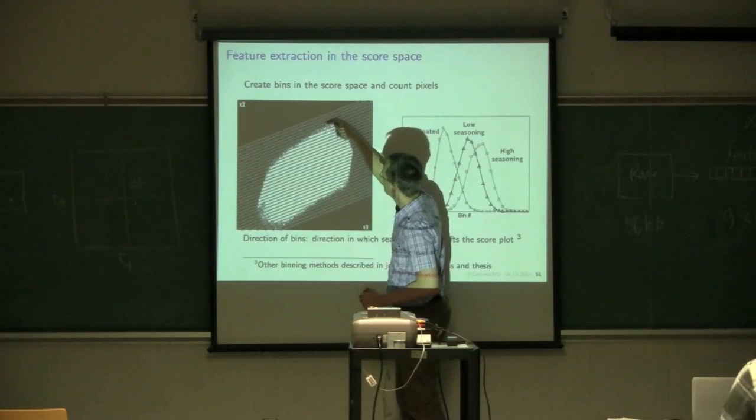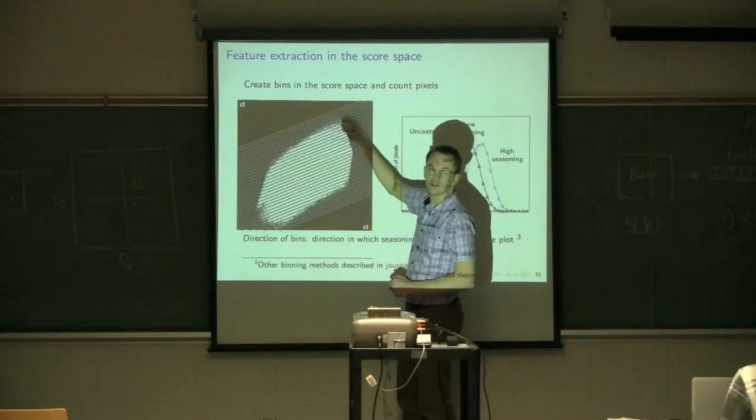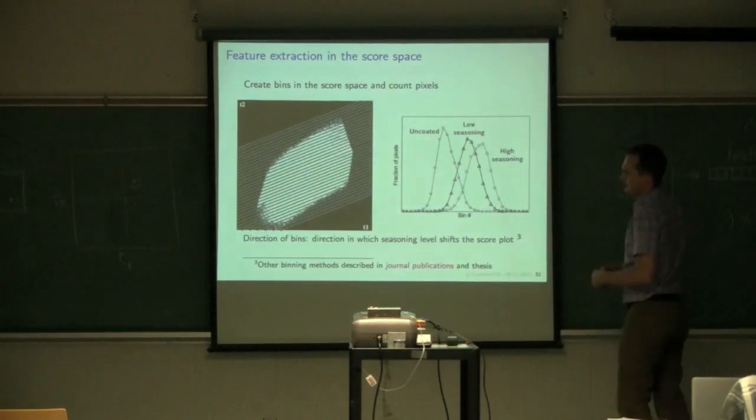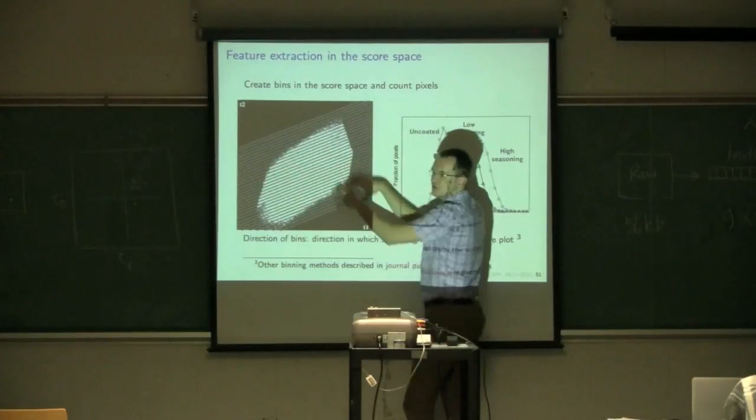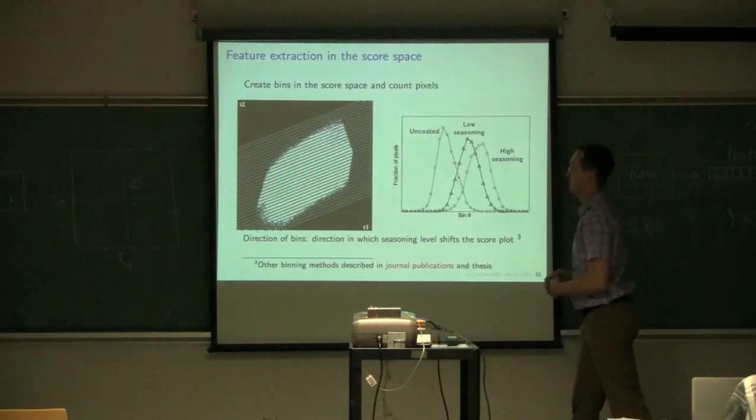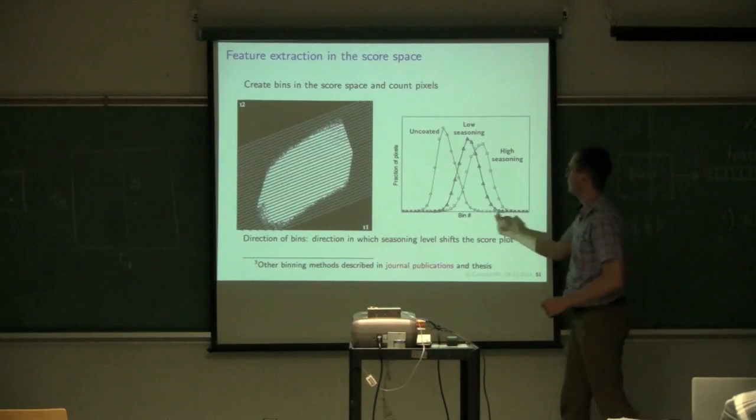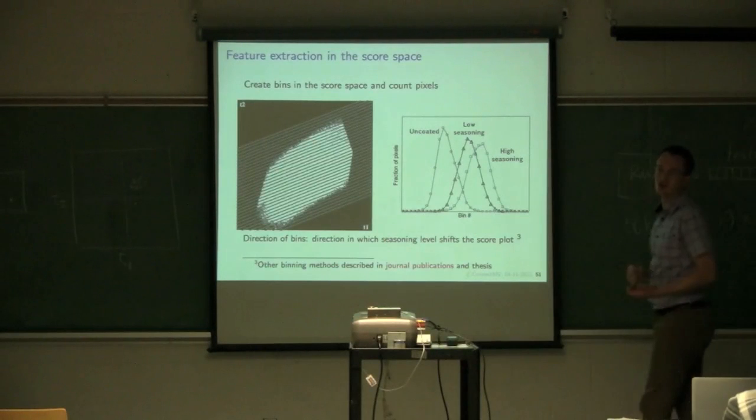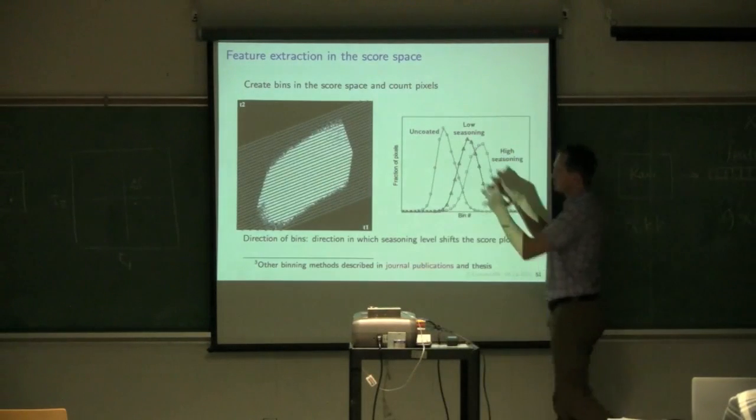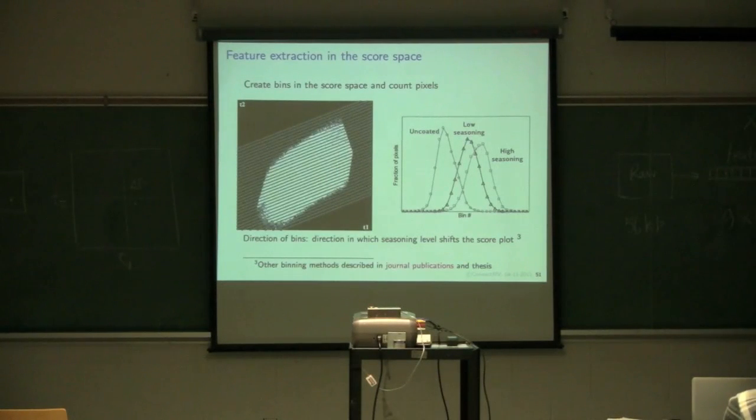And what she does then is she counts up the fraction of pixels in the image that fall in each bin. So in this first few bins, they almost have no percent of the image space. The fifth bin starts to have some very small percentage of the total pixels in that bin. And images with higher values of seasoning, we know that that cluster's moved further down. So we should see these bins over here have more pixels than the pixel bins up there.